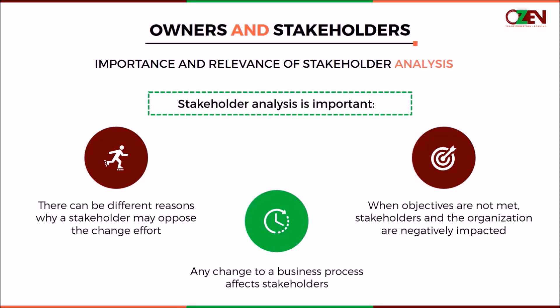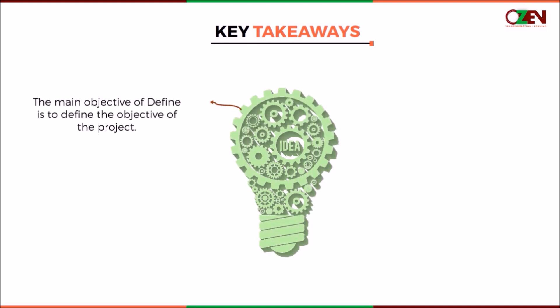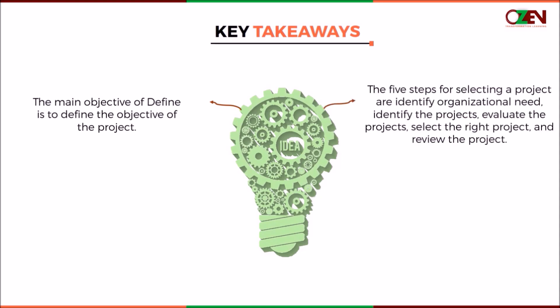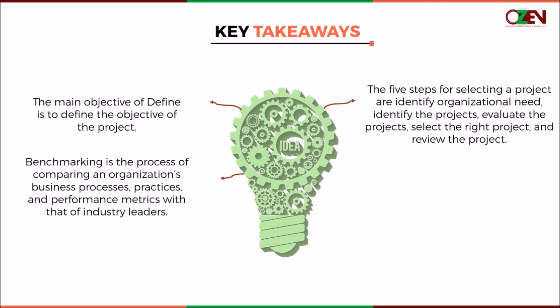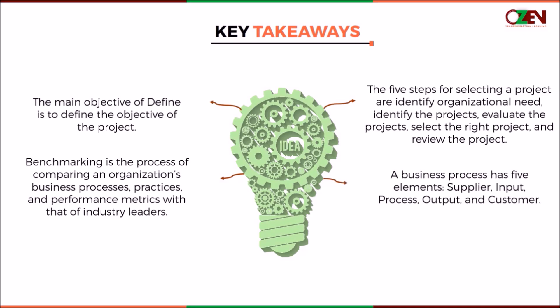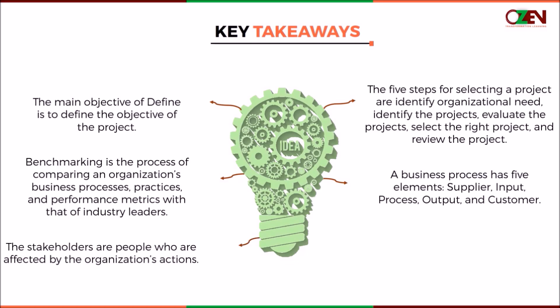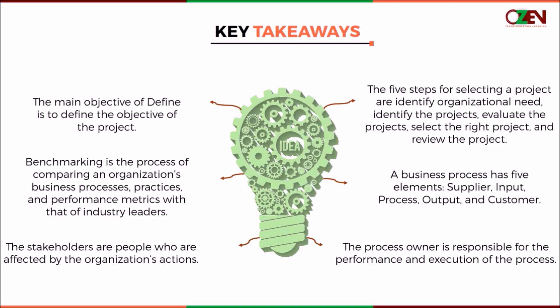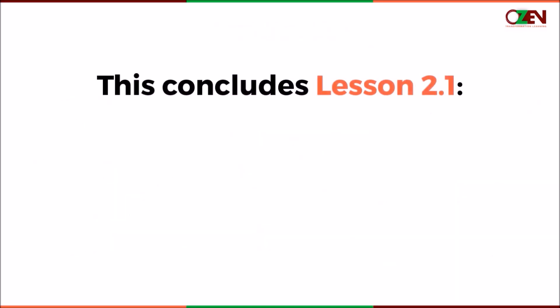With this, we have come to the end of this lesson. The main focus of Define is to define the objective of the project. The five steps for selecting a project are: identify organizational needs, identify the projects, evaluate the projects, select the right project, and review the project. Benchmarking is the process of comparing an organization's business processes, practices, and performance metrics with those of industry leaders. A business process has five elements: supplier, input, process, output, and customer. The stakeholders are people who are affected by the organization's actions, and the process owner is responsible for the performance and execution of the process. This concludes the lesson on project identification. The next lesson is Voice of the Customer.